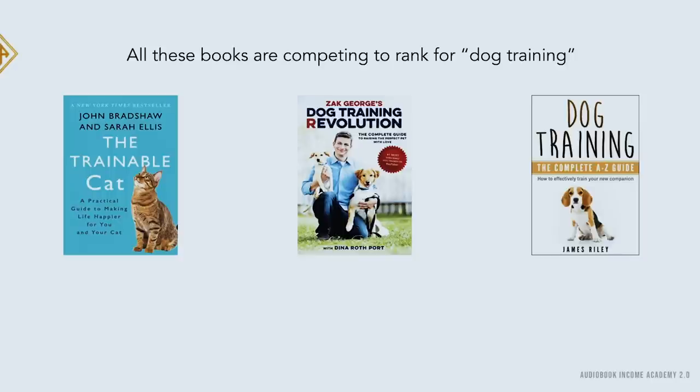Let me go into the computer to show a graphic to explain this more. This is a PowerPoint slide from AIA 2.0. Here I have three books all hypothetically competing to rank for the word 'dog training.' One is a cat training book, one is a very popular dog training book, and one is a subpar self-published dog training book — all with hypothetical CPC bids of 60 cents, 25 cents, and 30 cents. If you didn't know any better, you'd probably think the cat training book would get the top ad spot, but that's not the case.